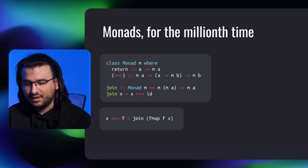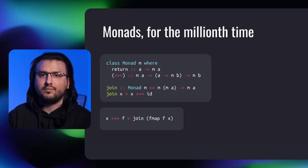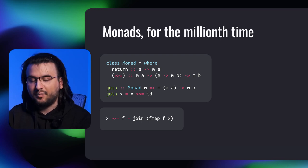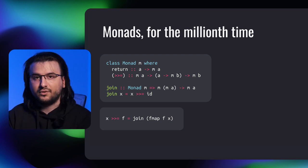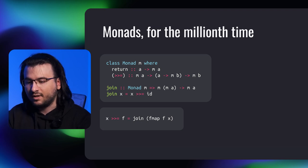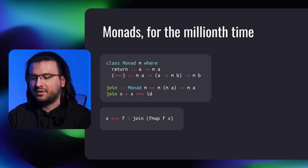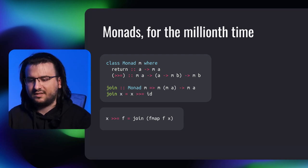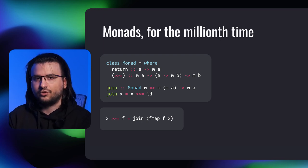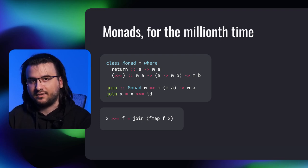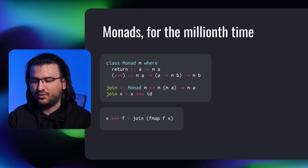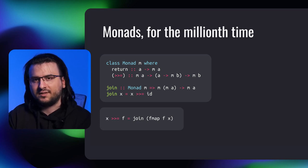Now, let's recall the two relevant functions defined in the monad type class: return and bind. Return lifts an element of a type into a monadic context, and bind transforms ma to mb by applying the function — the second argument — to the unwrapped value of type a. There's also another essential monads function called join, defined via bind — it removes one nesting level in the monadic type. Bind can also be defined via join. Moreover, theoretically speaking, join should be part of the monad type class.